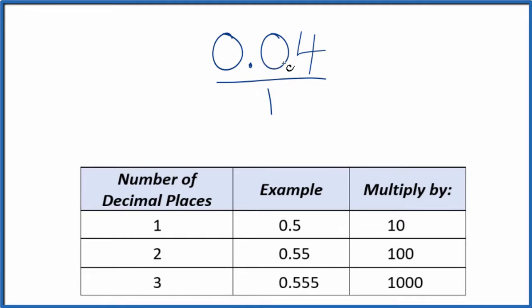Since we have two decimal places, we want to get this to be a whole number here. So we have one, two decimal places. We're going to multiply by 100, like this.